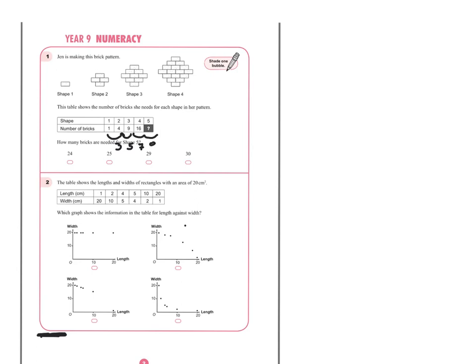So we assume the next odd increment is nine, and sixteen plus nine gives us 25. Therefore the answer is 25.